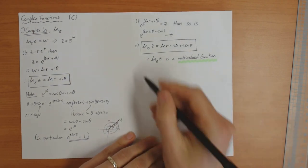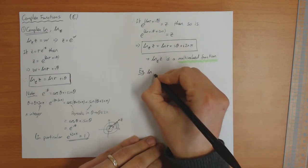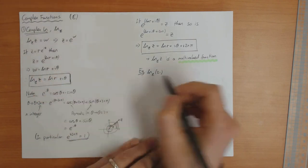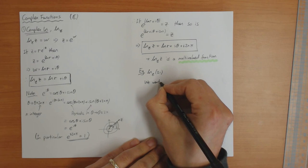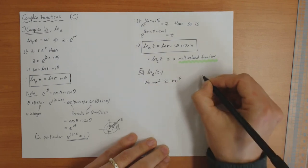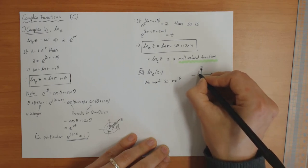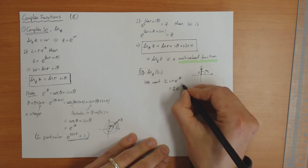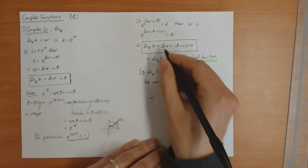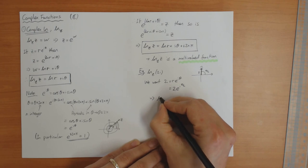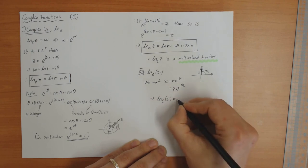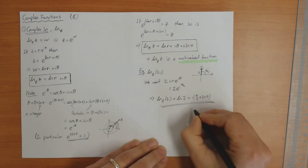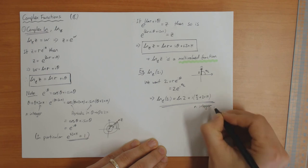Let me do a quick example. Suppose we want to compute the complex logarithm of 2i. First we need to find 2i in the form r·e^(iθ). On an Argand diagram, 2i is up on the imaginary axis, so the length is 2 and the angle is π/2. Therefore 2i = 2·e^(iπ/2). Using the formula with r = 2, θ = π/2, we get that the complex logarithm of 2i is log 2 + i(π/2 + 2nπ), where n is any integer.